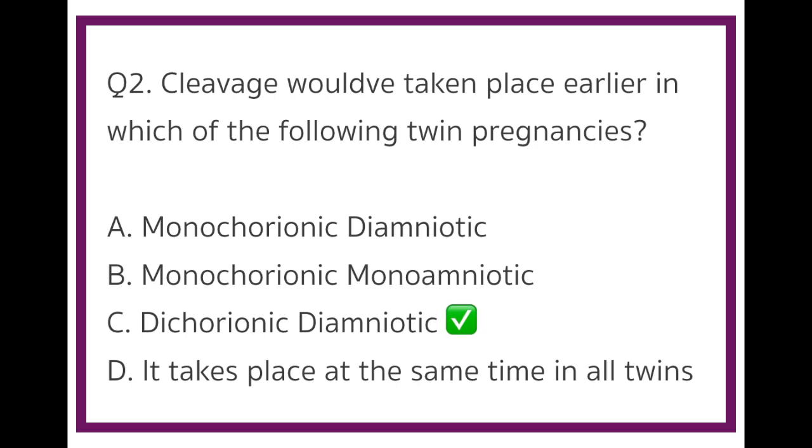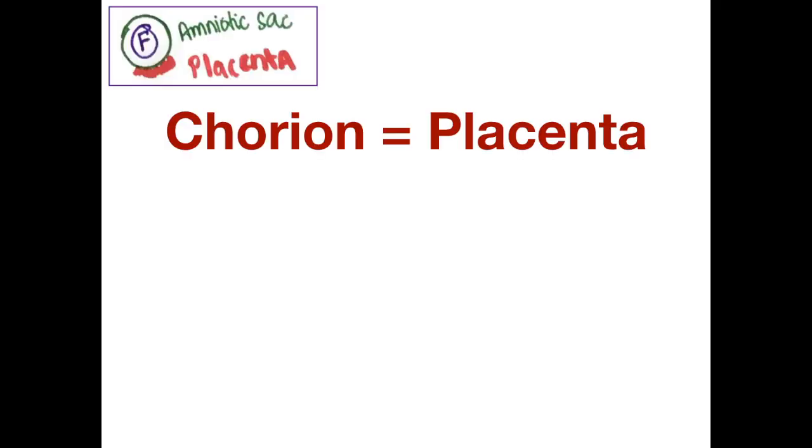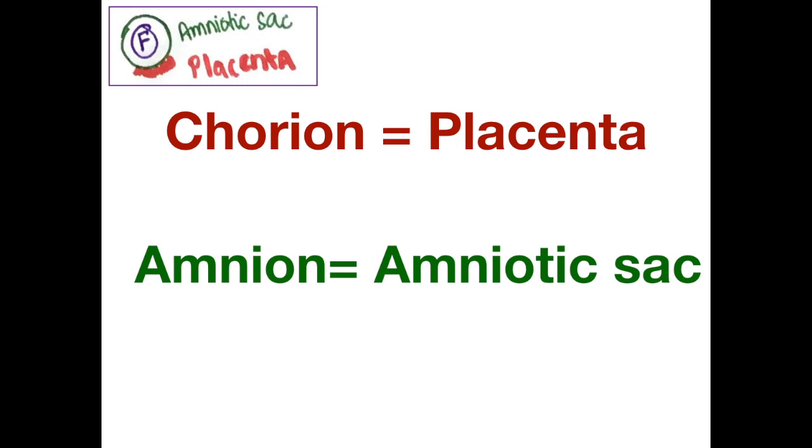Let's first understand these terms. Chorionic refers to the number of placentas and amniotic refers to the number of amniotic sacs.